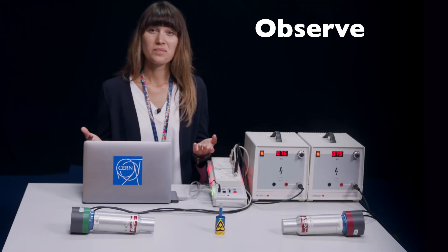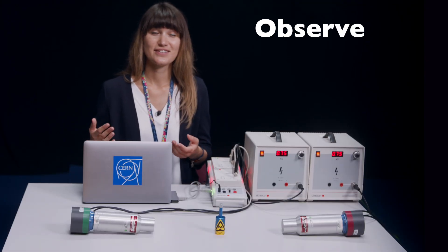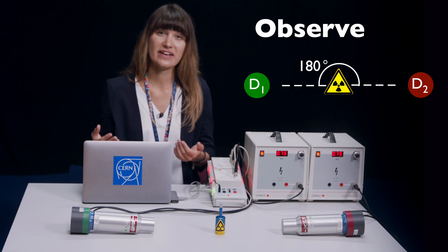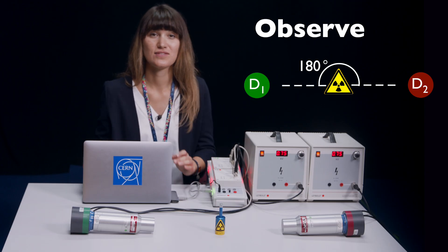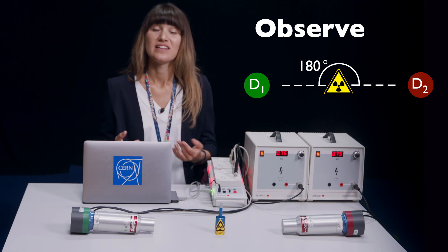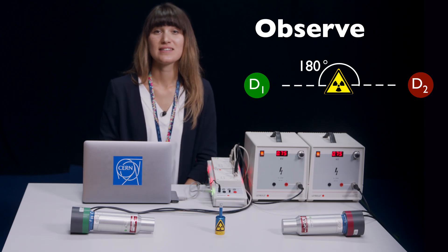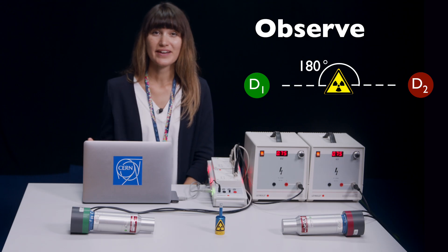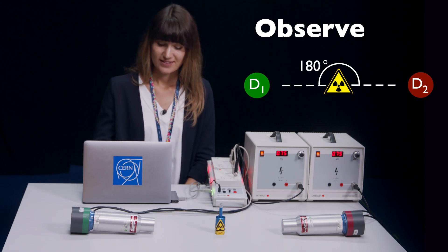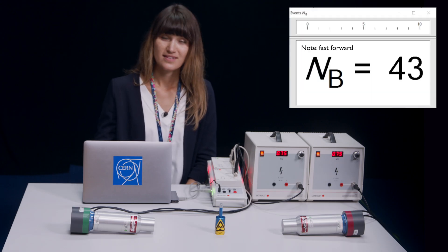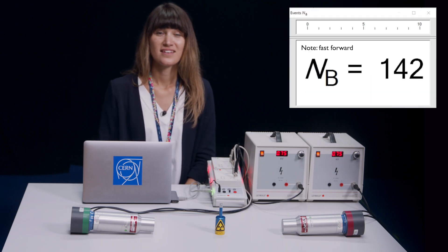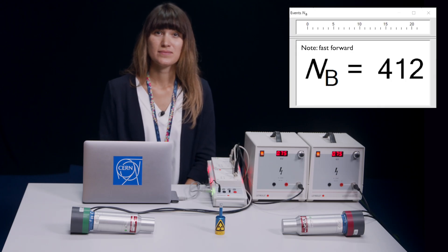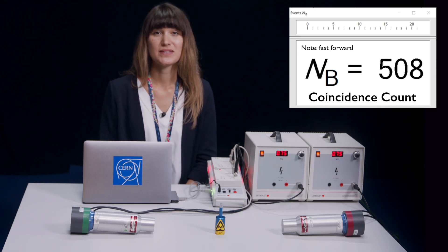We have the output diagram. I have placed the detector at 180 degrees angle with respect to the radioactive source. Now I start the measurement again and I let it run for 100 seconds. The output diagram shows the result.